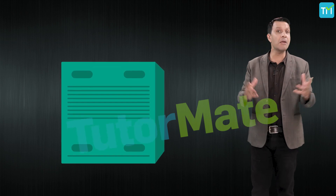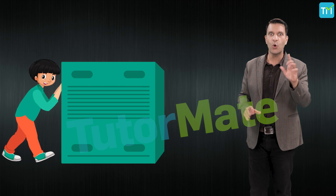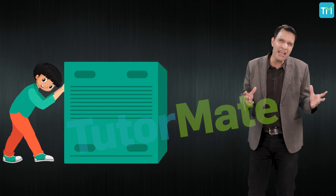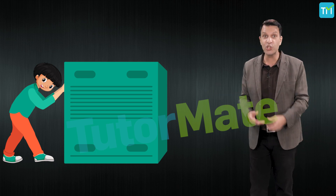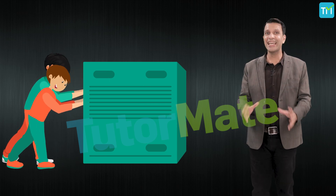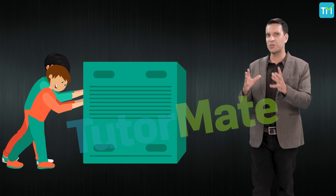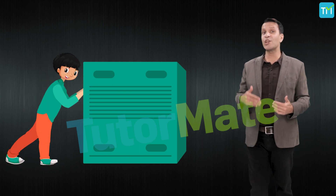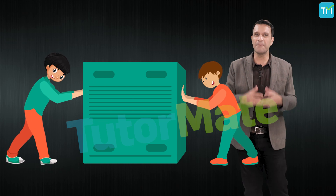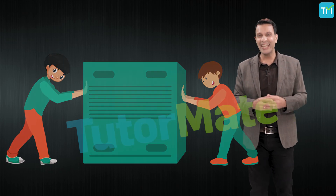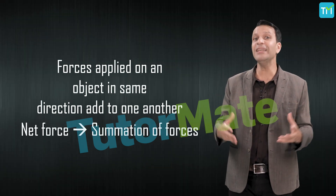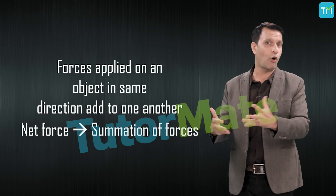Take a heavy object — a table or a big box that you can push only with a lot of force. Try pushing it all by yourself. Now ask a friend to help you push it in the same direction. When you both apply force together at the same time, the task becomes much easier. But what if you push the box in one direction and your friend applies force from the opposite direction? It may or may not move, depending on who is applying more force. Forces applied in the same direction add to one another, so the net force is the summation of both forces.